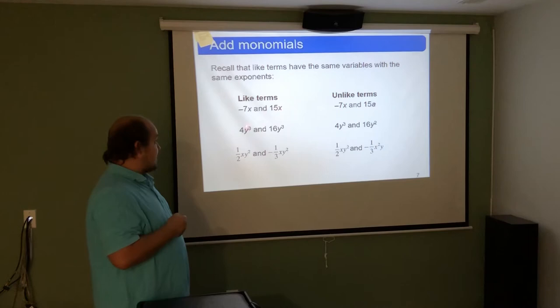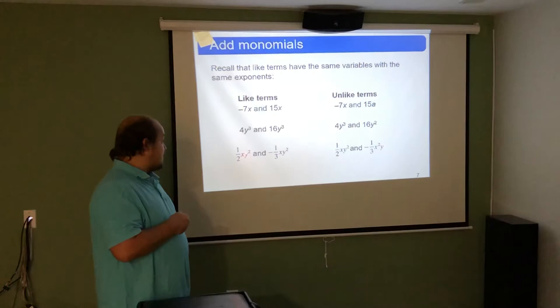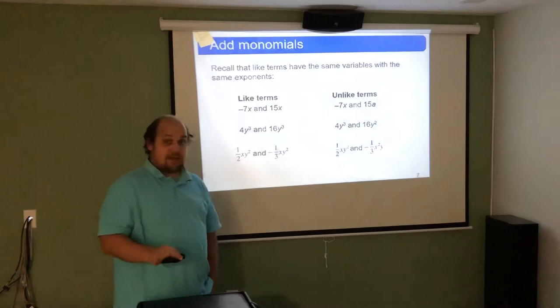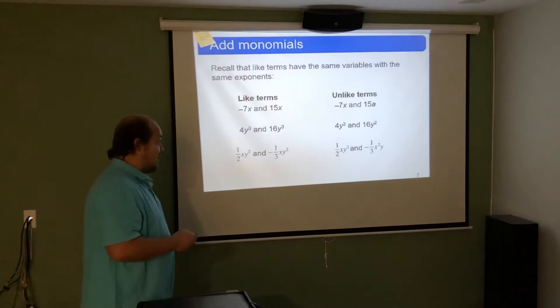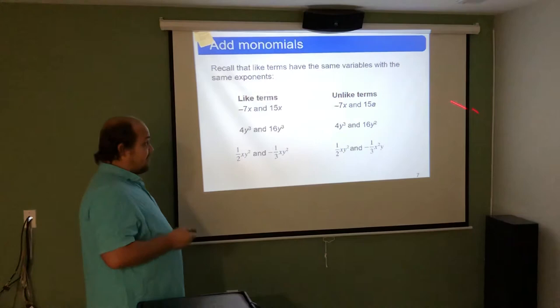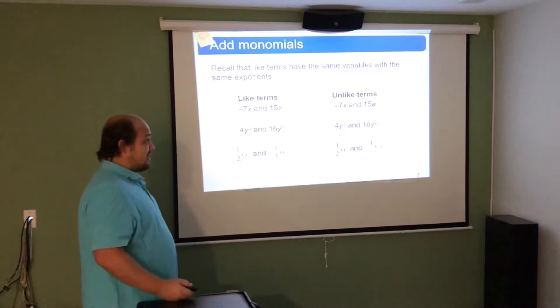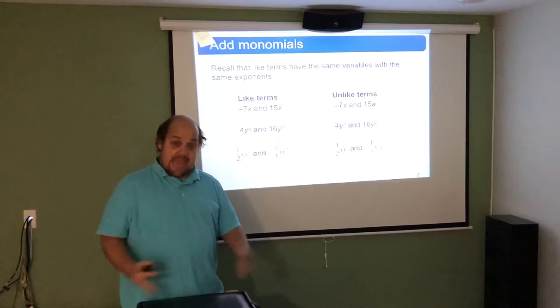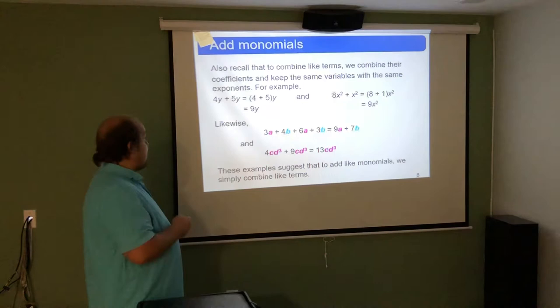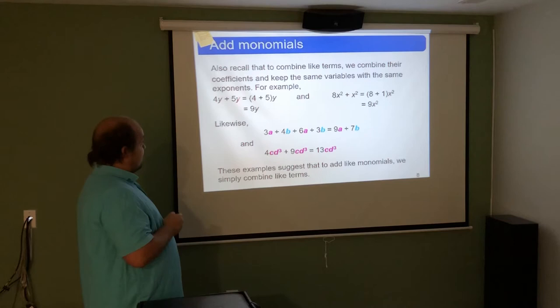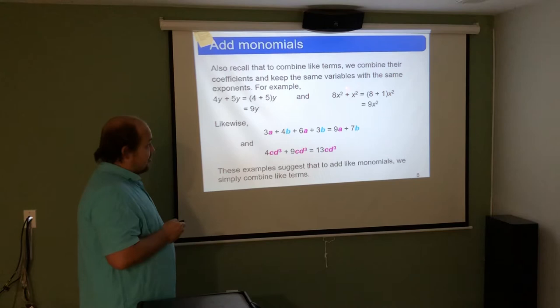Like terms can be added or combined. Negative 7x and 15x gives 8x. 4y cubed and 16y cubed gives 20y cubed. One-half xy squared minus one-third xy squared gives one-sixth xy squared. Unlike terms must stay as they are — negative 7x plus 15a stays as negative 7x plus 15a, and 4y cubed plus 16y squared stays as 4y cubed plus 16y squared; they cannot be combined. For example, 4y plus 5y — keep the y since they're like terms and add the coefficients: 4 plus 5 gives 9y.